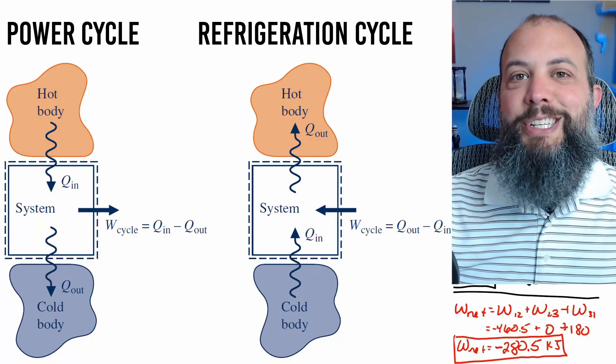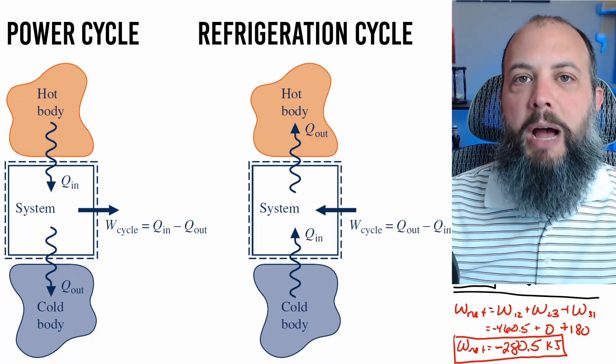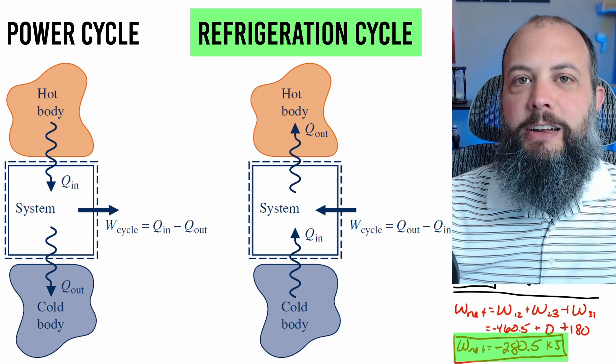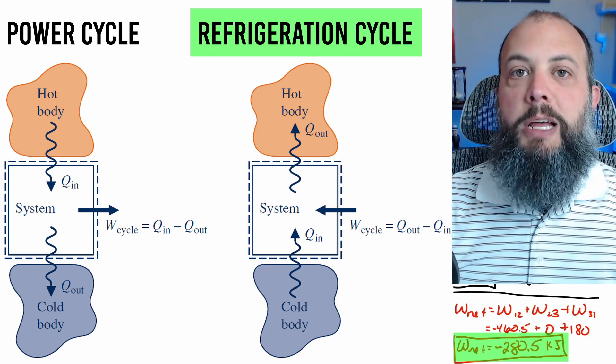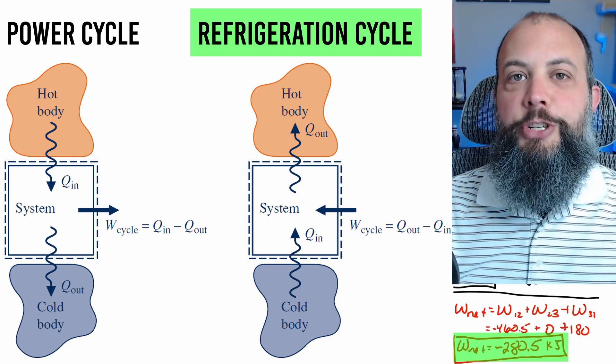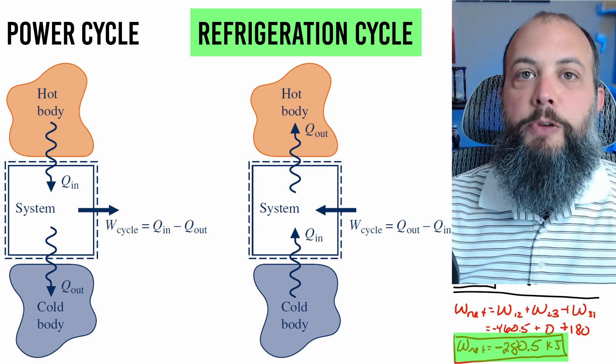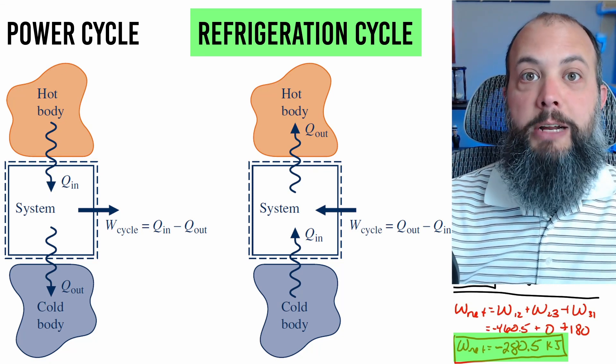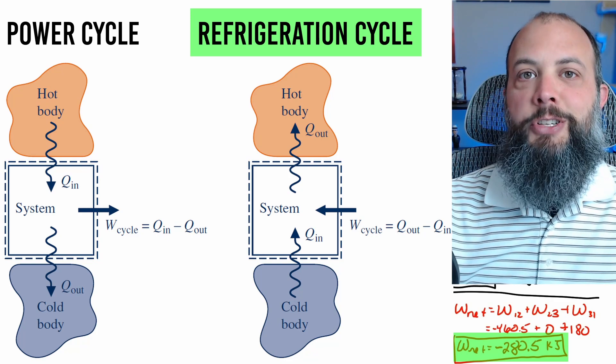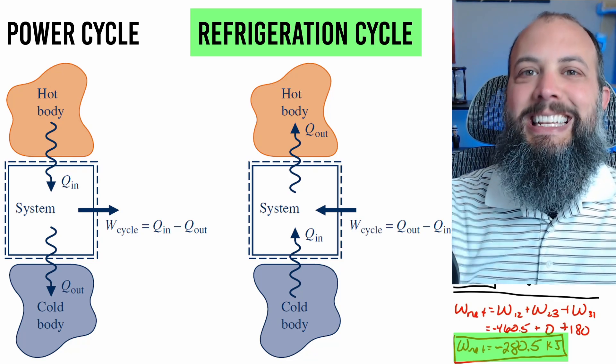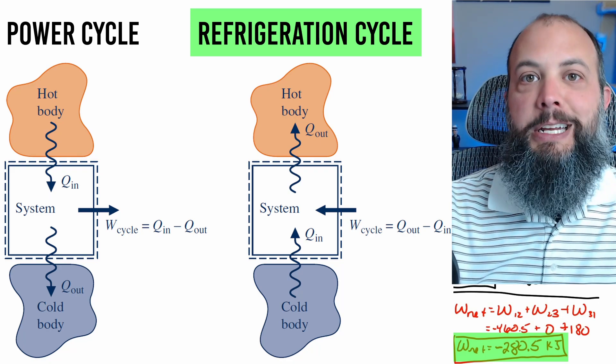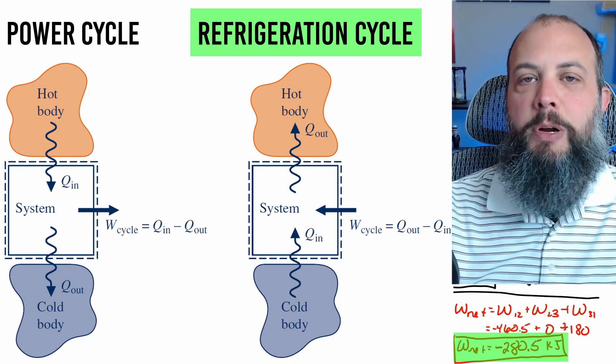All right final question is this a refrigeration cycle or a power cycle and the answer is refrigeration cycle and you can tell based on the sign for net work a power cycle produces work there's energy leaving the system so net work would have to be a positive term a refrigeration cycle like a refrigerator uses electricity to function so there has to be energy going into the system in the form of work in which case work term would be negative like it is for this problem so this problem could represent a refrigeration cycle.